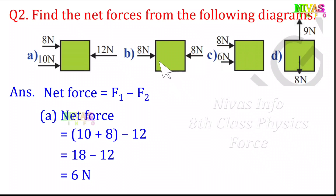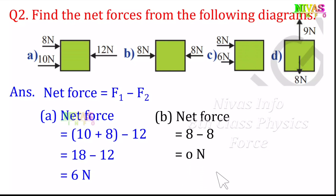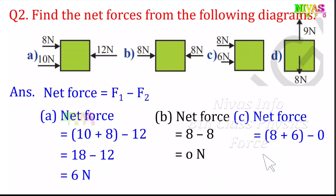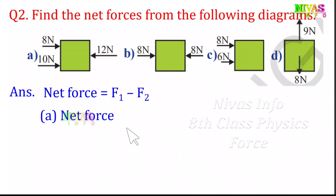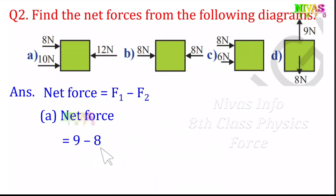Option C has 8N and 6N. These forces are in the same direction, so net force is 8 plus 6 equals 14N. Option D has 9N as the normal force and 8N as the gravitational force, which is the weight. Net force is 9 minus 8 equals 1N.